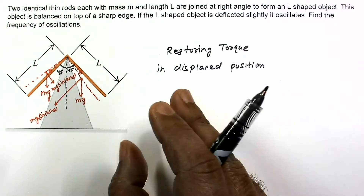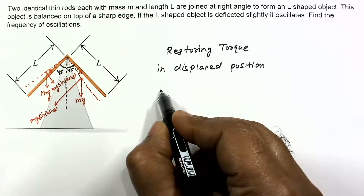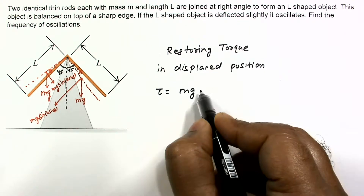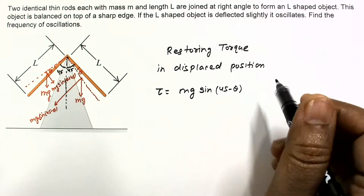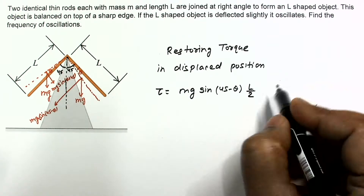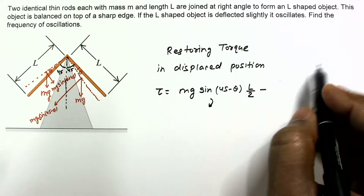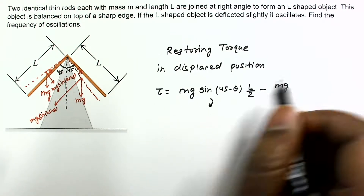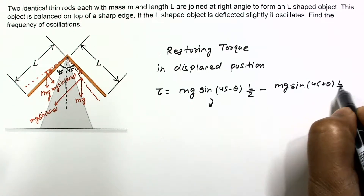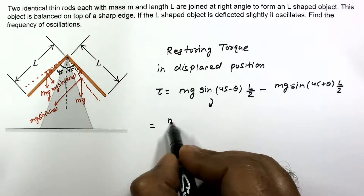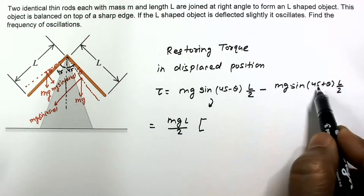When the system is displaced by angle theta, the restoring torque is equal to Mg·sin(45 − θ)·(L/2) minus Mg·sin(45 + θ)·(L/2). Taking clockwise as positive and the other as negative, we get MgL/2 times [sin(45 − θ) − sin(45 + θ)].